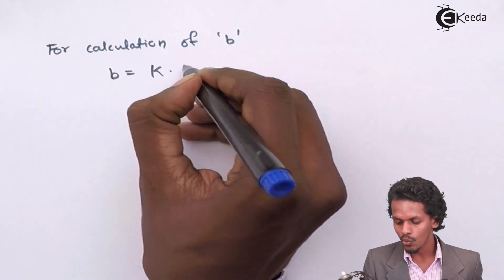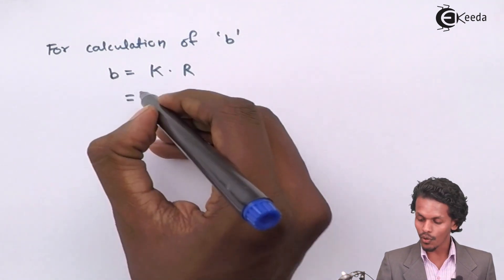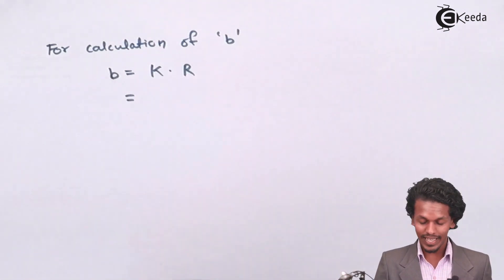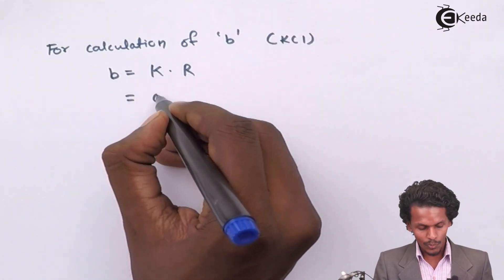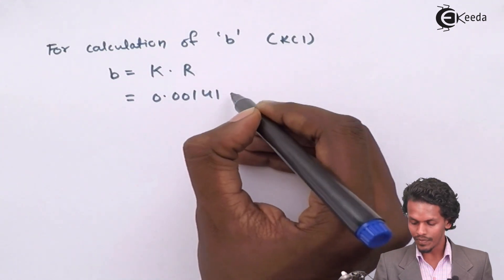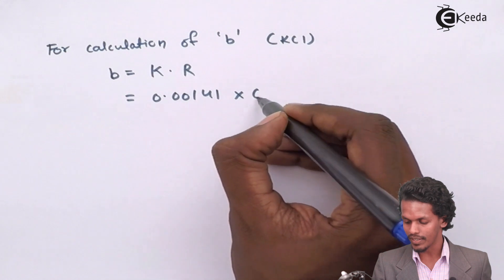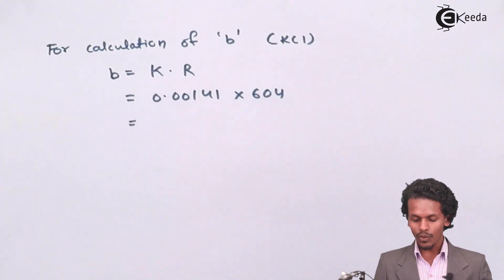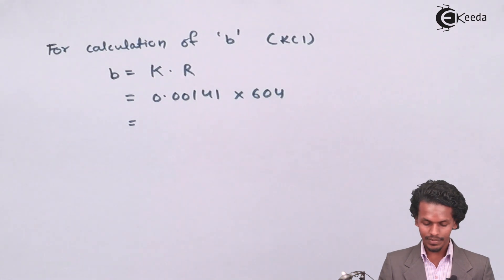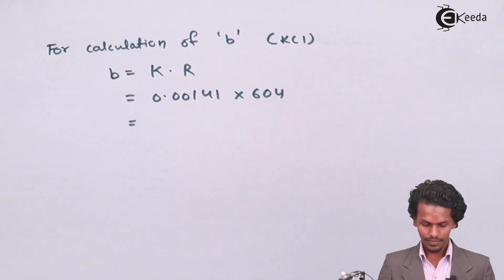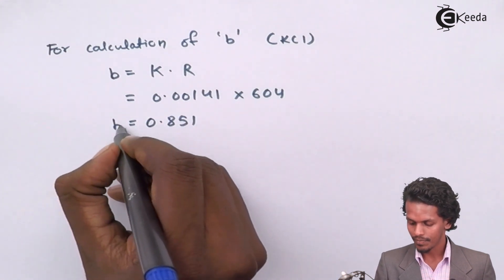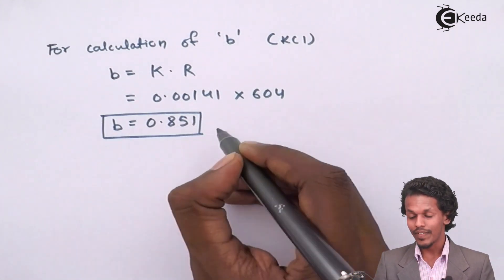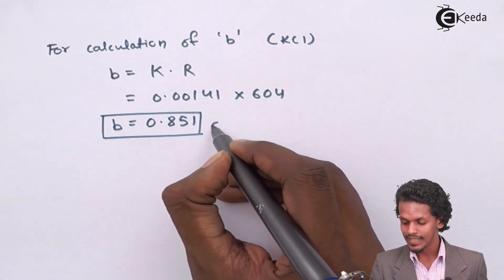For calculation of cell constant B, we have the formula B equals K into R. So the value of K given for the KCl solution is 0.00141 ohm inverse, and the resistance given is 604 ohms. Calculating this gives us a value of 0.851, with a unit of centimeter inverse.